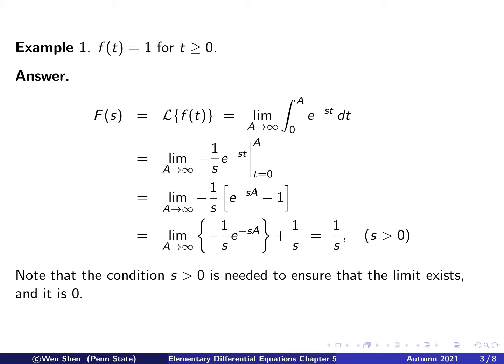Therefore, the Laplace transform of the constant function f(t) = 1 is F(s) = 1/s, for s bigger than 0. Pay attention that the condition s bigger than 0 is needed to ensure the limit exists. So for a function f(t) which is constant 1, its Laplace transform is 1 over s, for s bigger than 0.